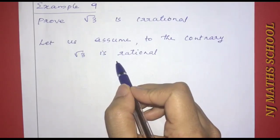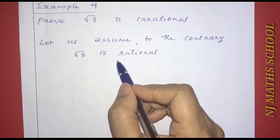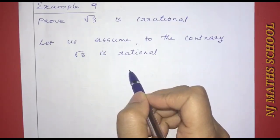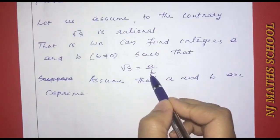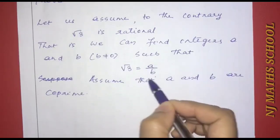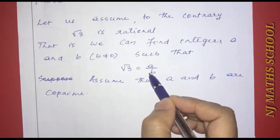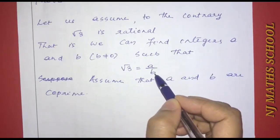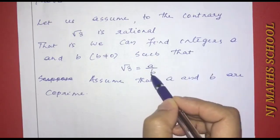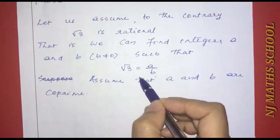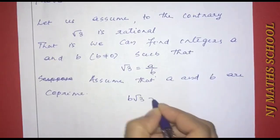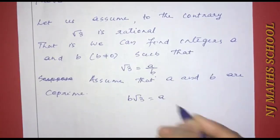We will use the p by q formula. We assume root 3 is equal to a by b, where a and b are co-prime integers and b is not equal to zero.